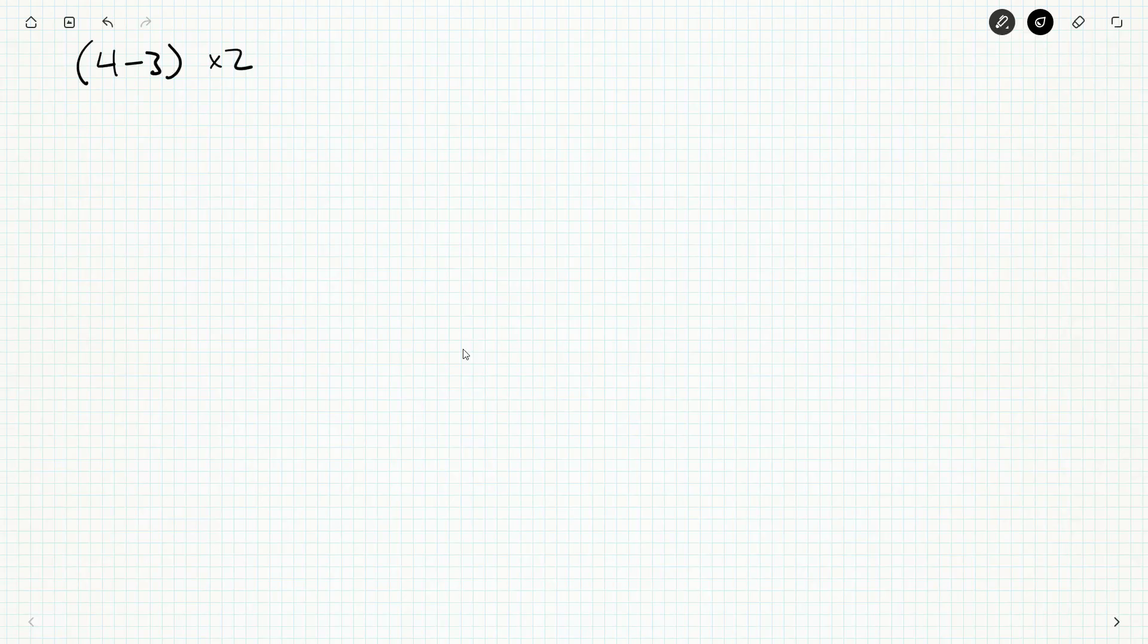So we've got 4 - 3 × 2. So this is very much an order of operations question. And what do we remember to do? We do the things in parentheses or brackets first. So what's 4 - 3? I know subtraction is lower in the order than multiplication, but the brackets bring it up in precedence. So 4 - 3 is 1.